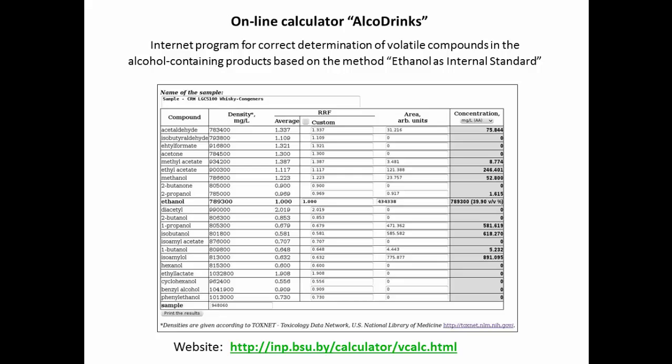The online calculator AlcoDrinks was created in order to help people use the new method. It makes all the calculations. All you need is just enter the RRF values and peak areas from measured chromatogram.